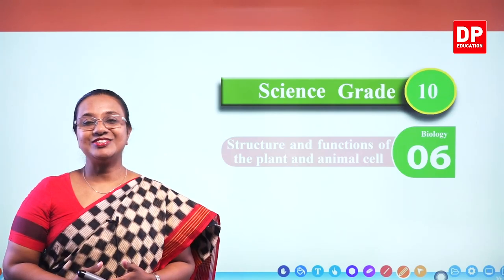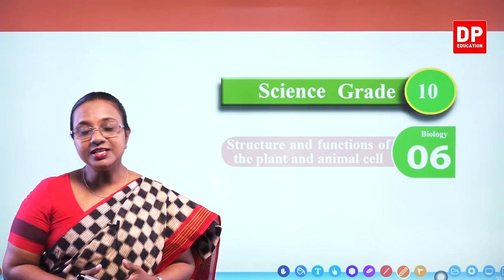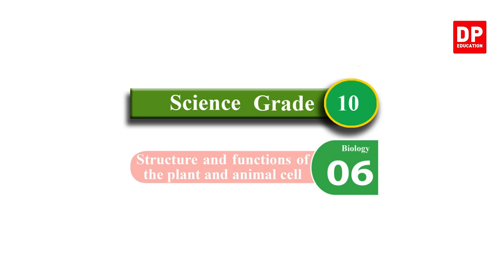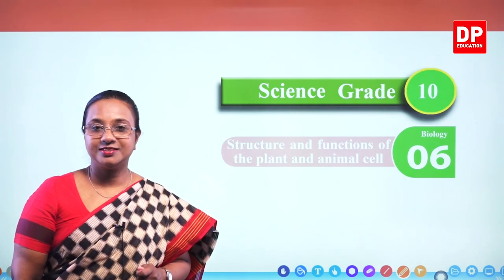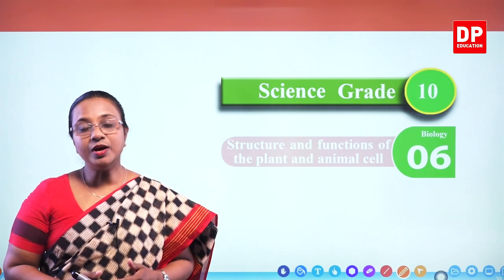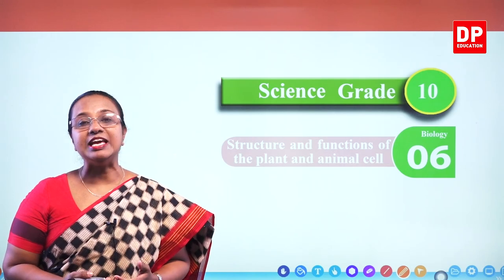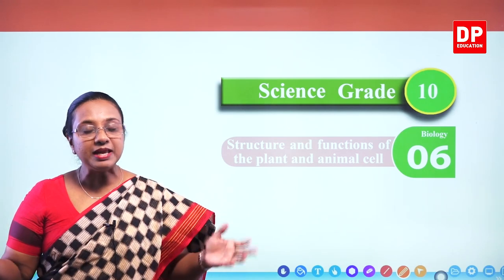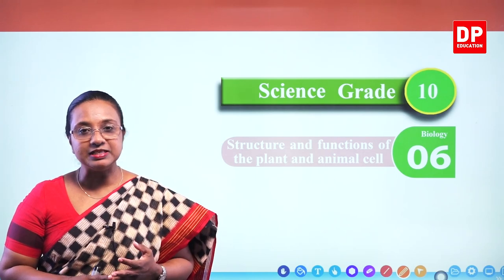Hello grade 10 students. Today I am going to discuss unit 6 of your science textbook: structure and functions of the plant and animal cell. This is a biology unit, so it is related to living organisms. If we look around us, there are many different types of living organisms — the plants, animals and us.